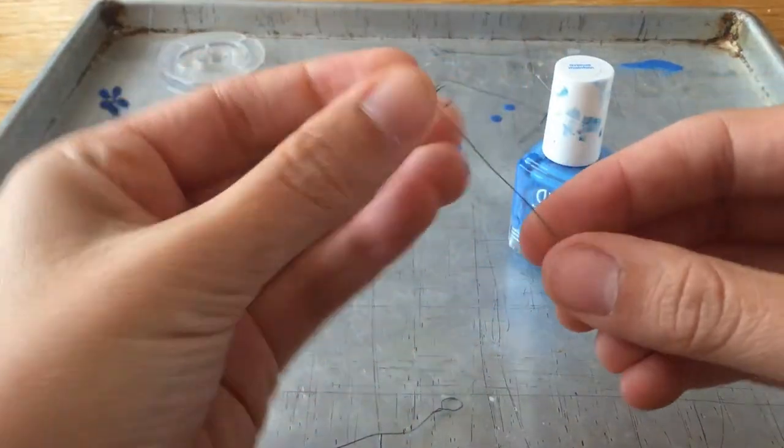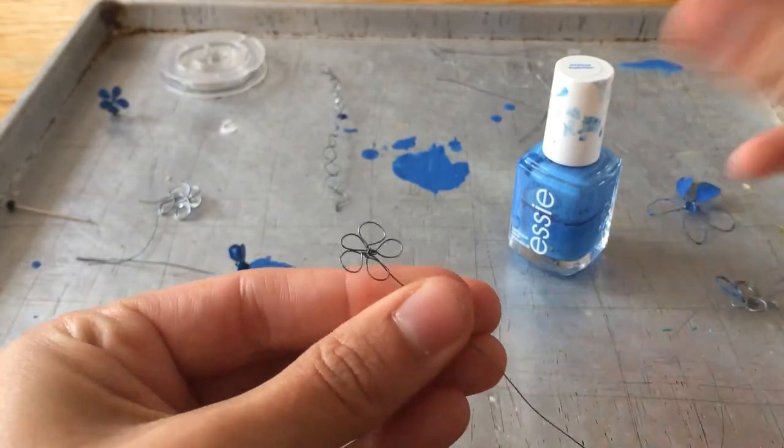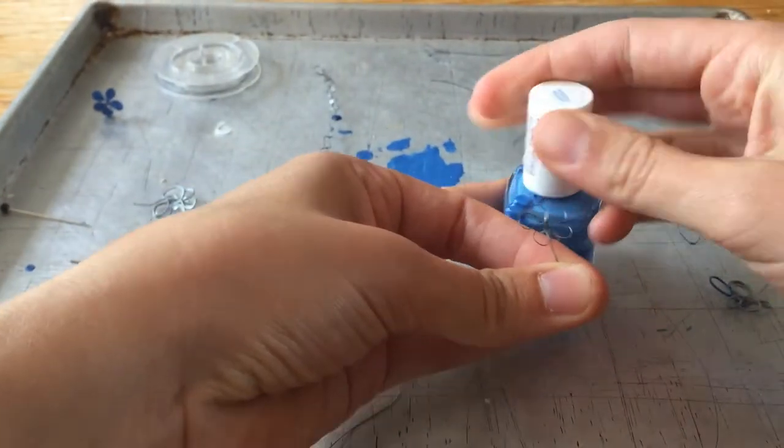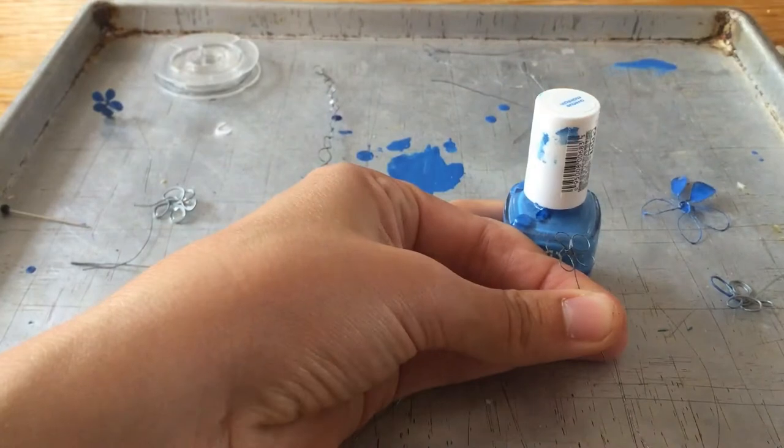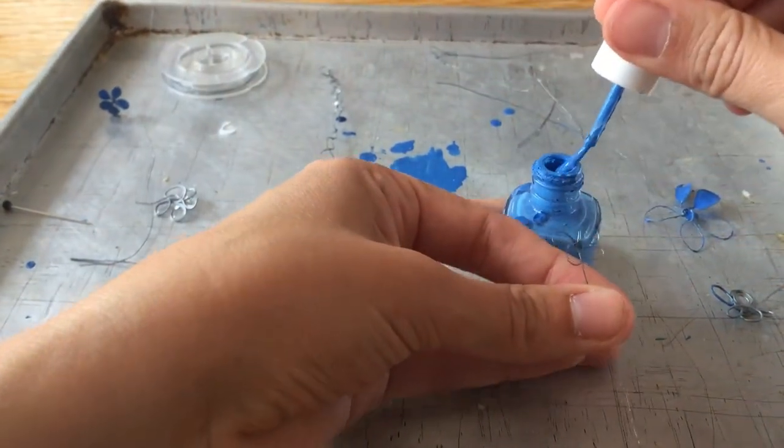Okay, so I've got one I made before and now I'll show you how to paint it. You can just use the paintbrush that's in the nail polish, otherwise you could use your own paintbrush, although it's pretty hard to wash off.